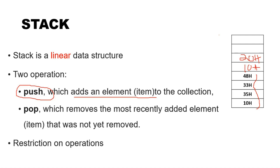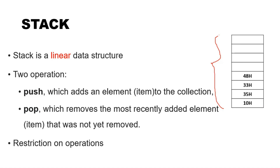Pop operation means removing an item from the stack when we don't require it, so we can use it in some other instruction in the program. Now you might have a doubt: stack looks like continuous memory, and storing and removing items from memory is also possible. So what is the difference between regular memory and a stack? The difference is that push and pop operations have restrictions that regular memory does not have.